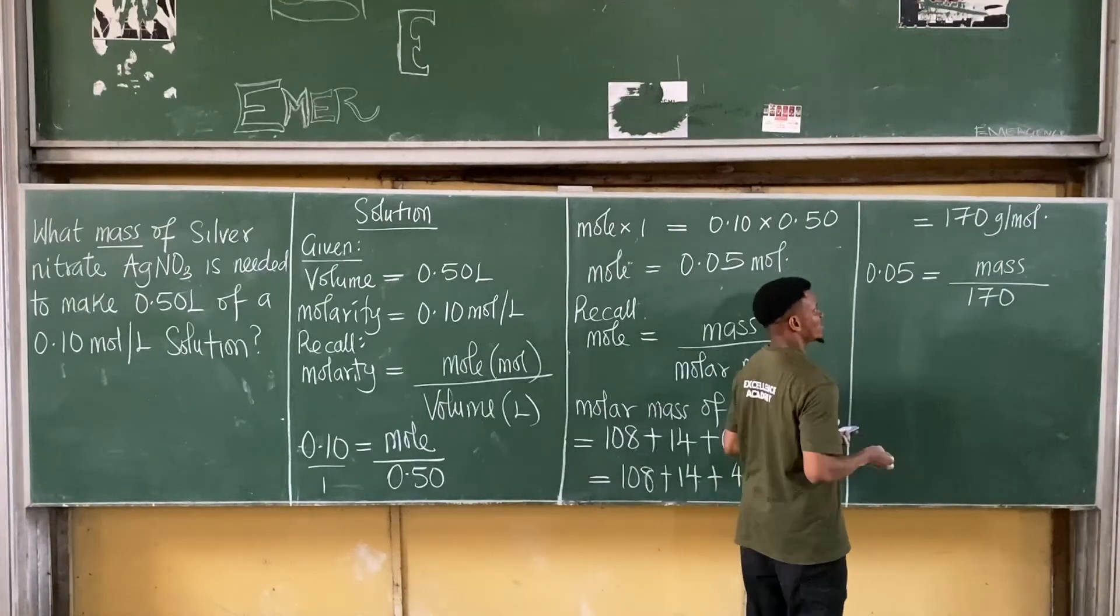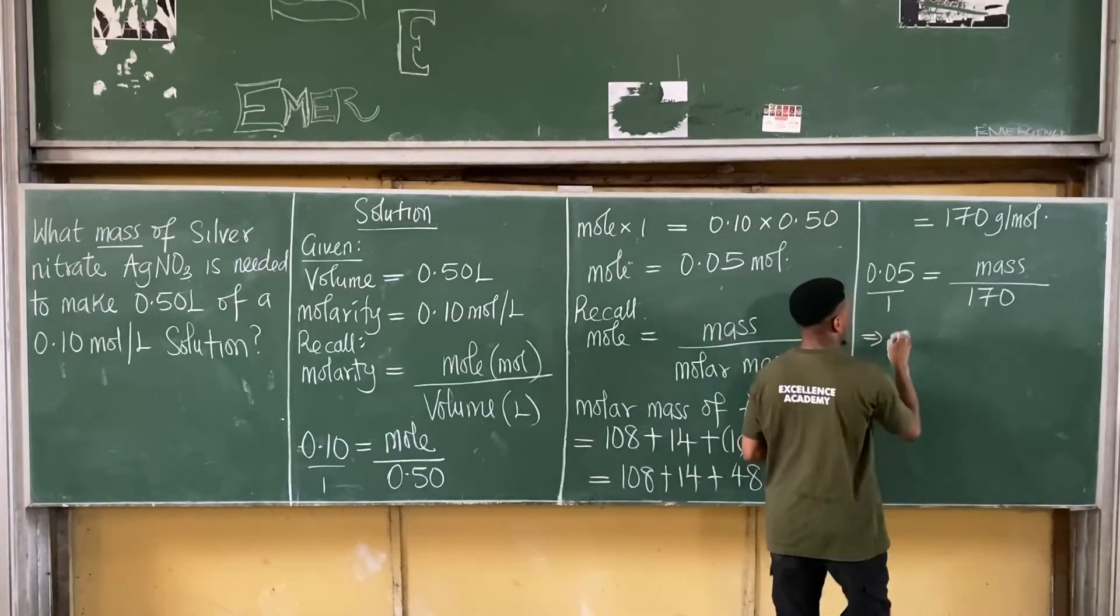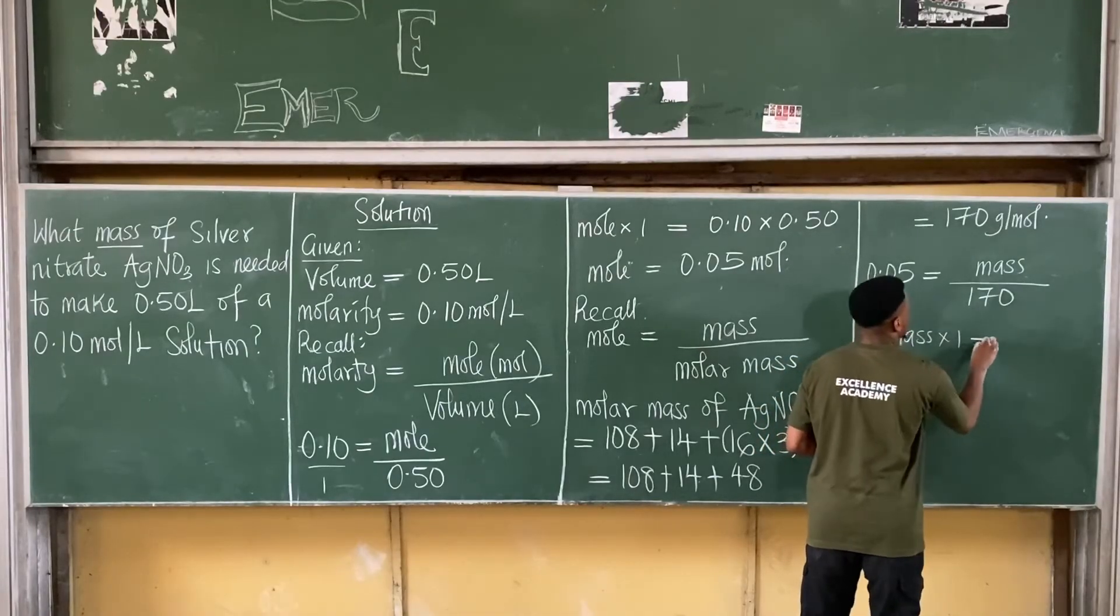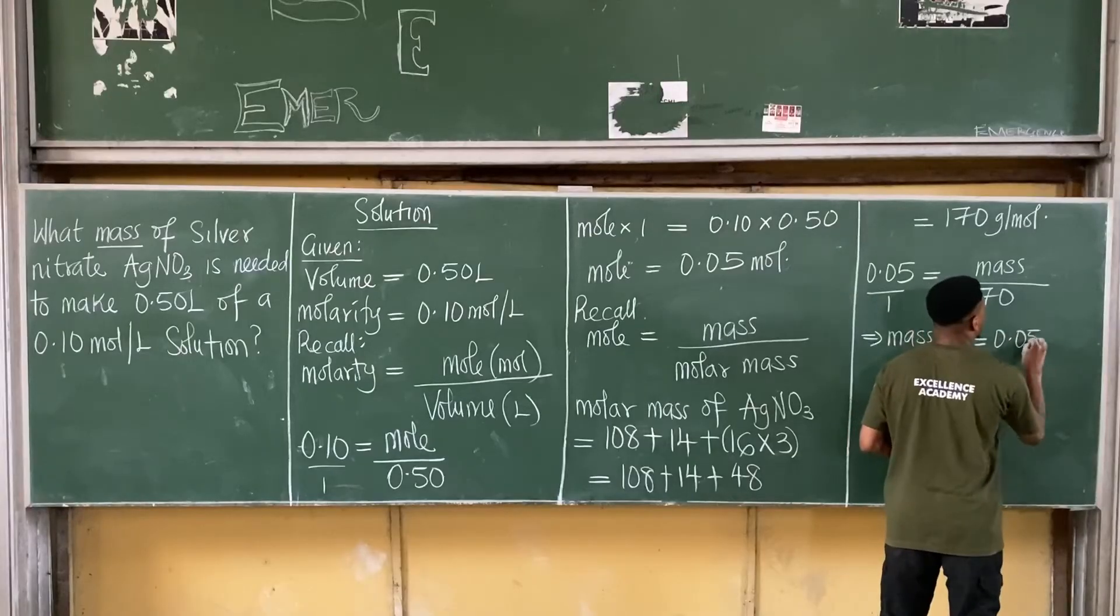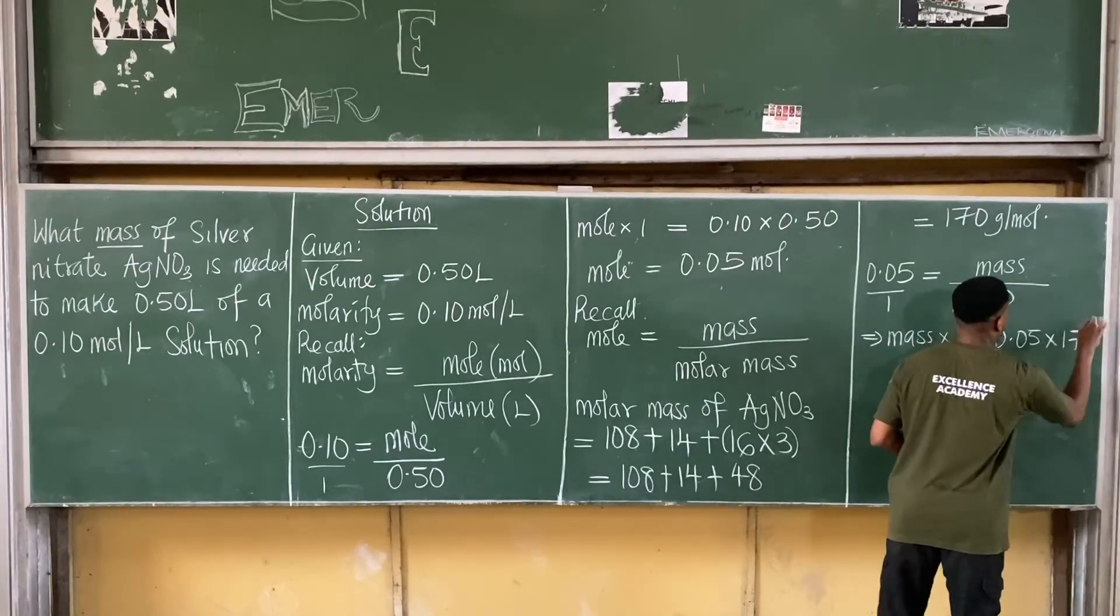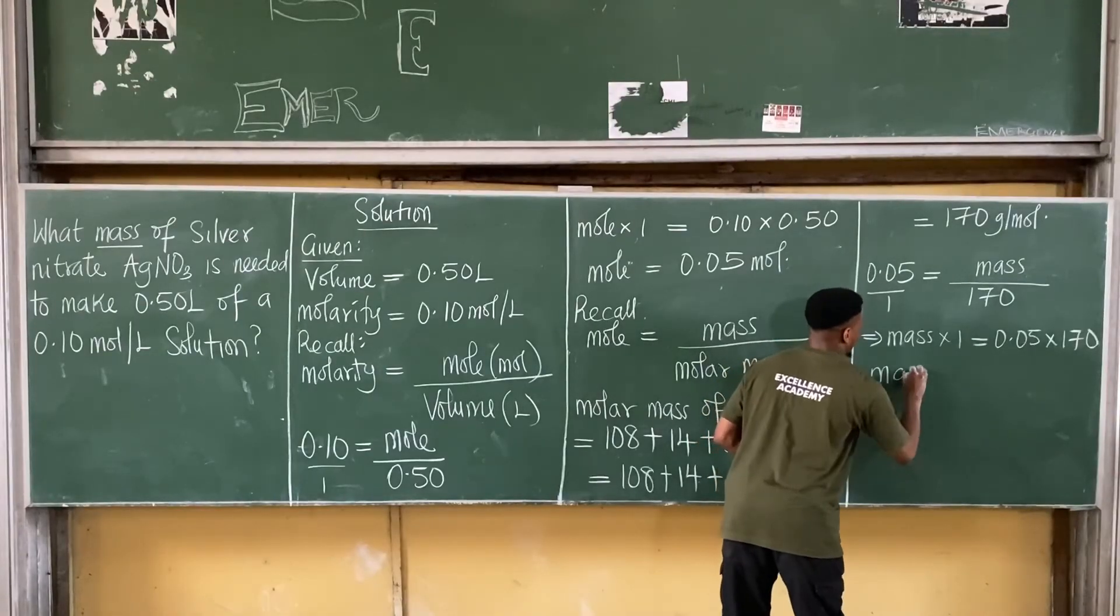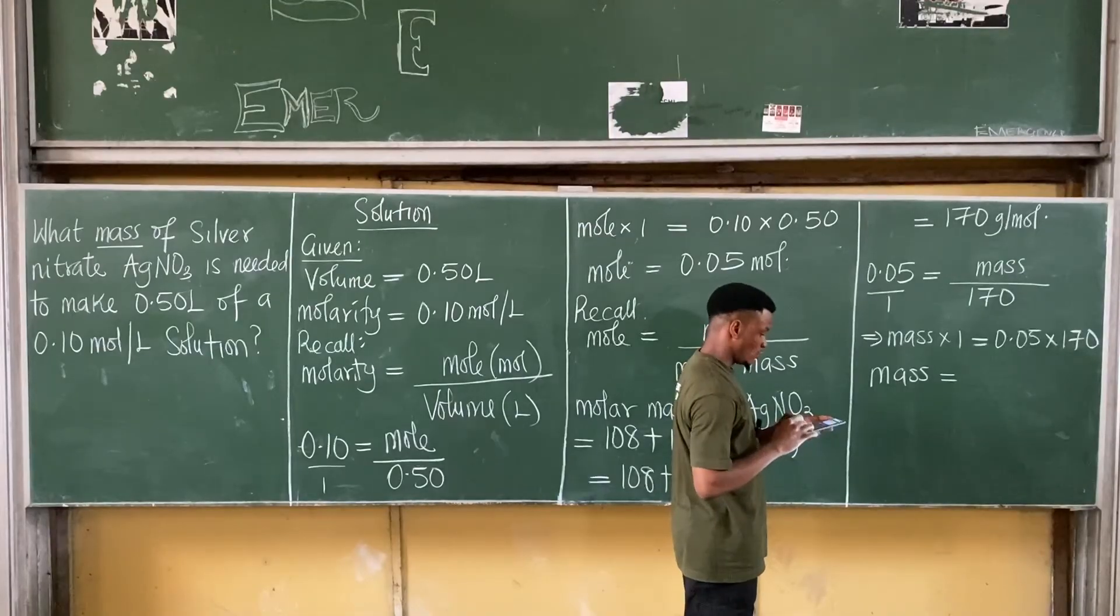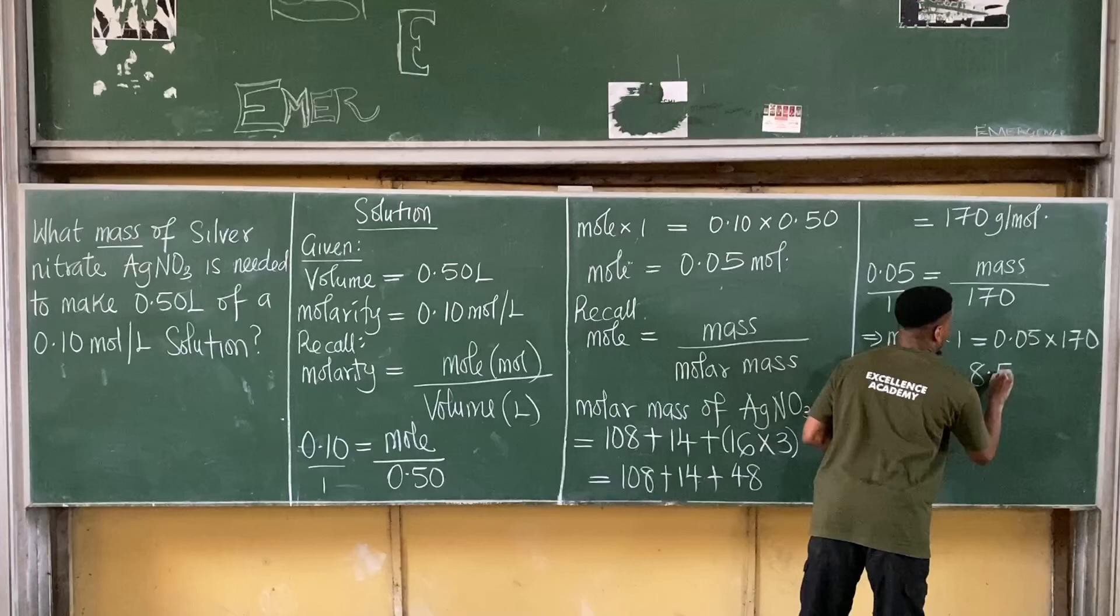So how do we get mass from here? Simply cross multiply. Becomes all over 1, so this becomes mass times 1. So mass times 1 is equal to this times this, 0.05 times 170. Mass times 1 gives you mass is equal to 0.05 times 170, that gives you 8.5.